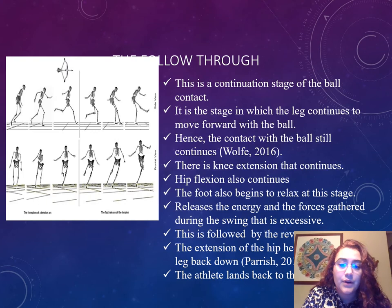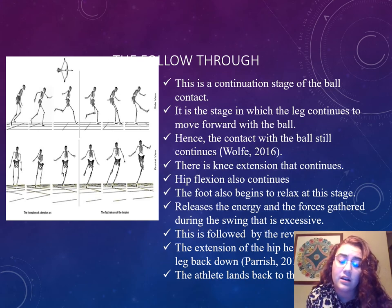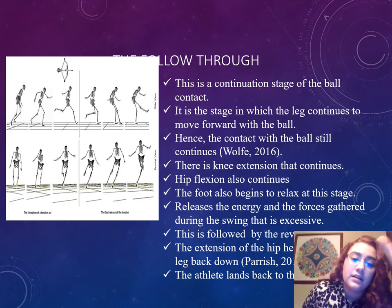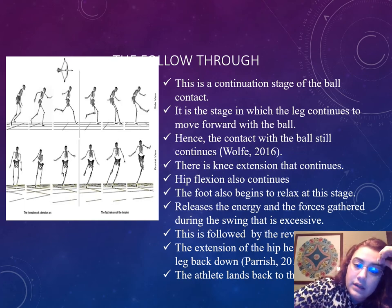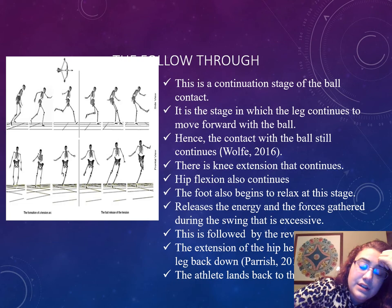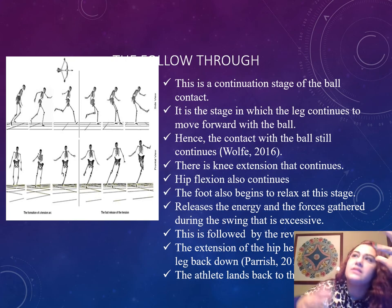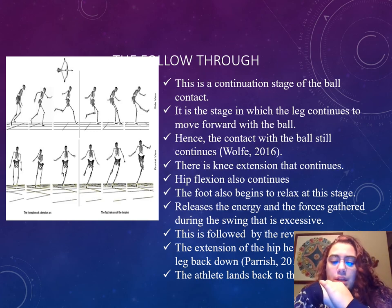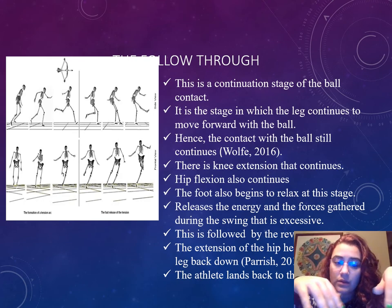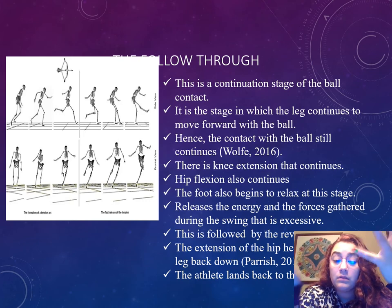The follow through — the photo covers up the title, but this is the follow through. This is the continuation stage of the ball contact. This is the part where your leg follows through and continues to move forward with the ball. The contact with the ball still continues. Hip flexion and knee extension continue, but the foot also begins to relax at this stage. It releases the energy and forces gathered during the swing. It's followed by the reverse — the extension of the hip helps in bringing the leg back down. The athlete will then land back on the shooting foot.